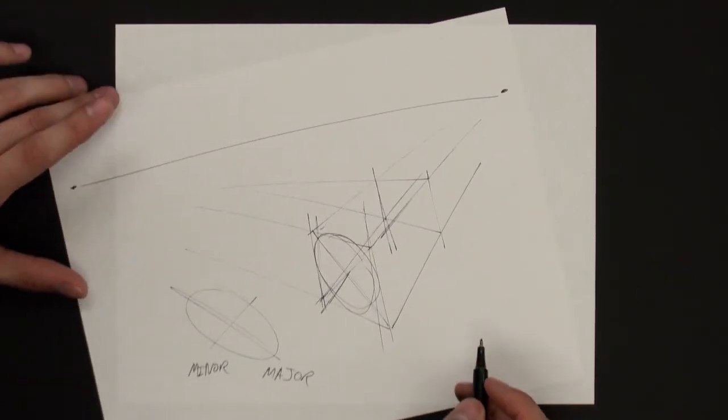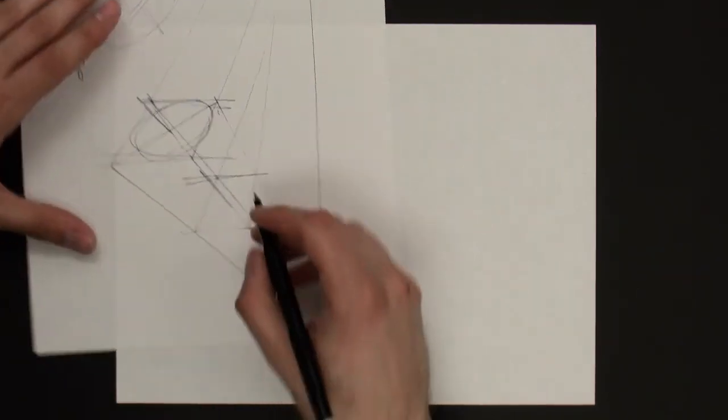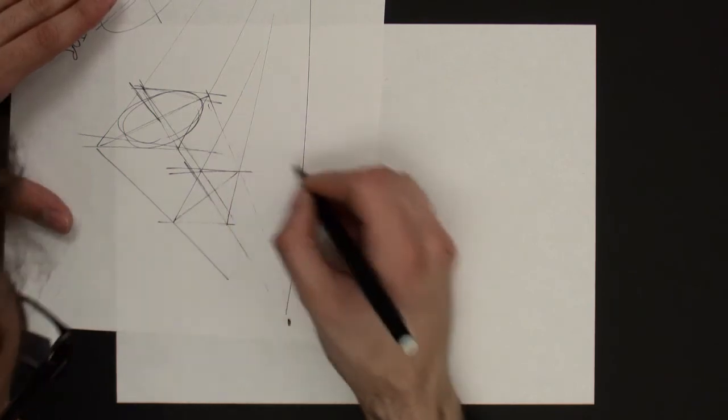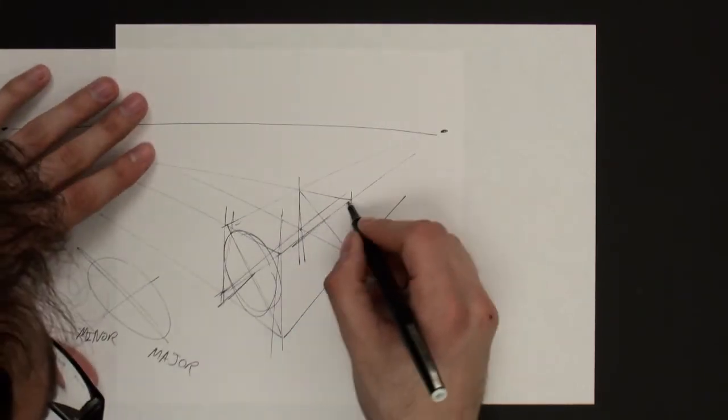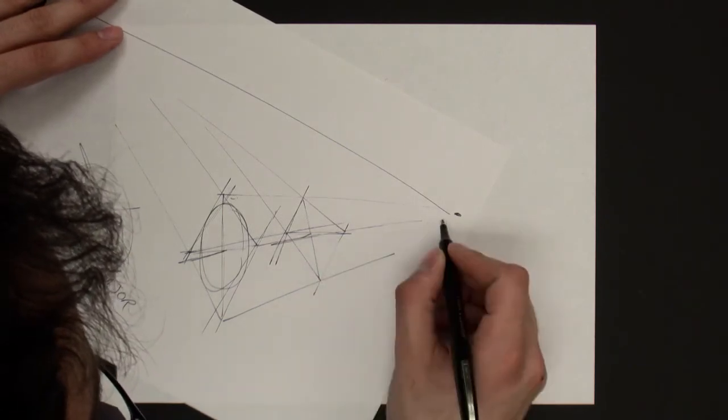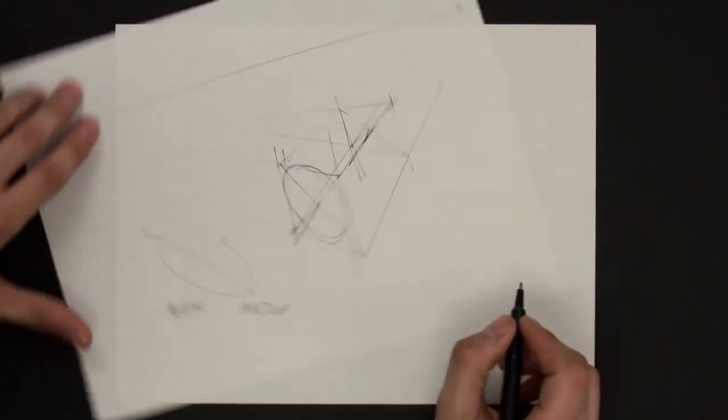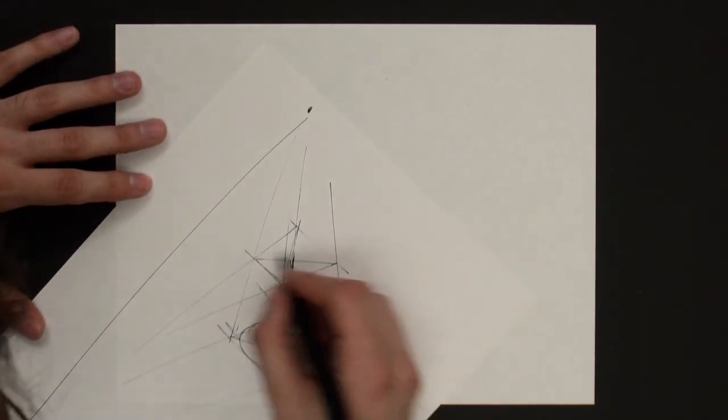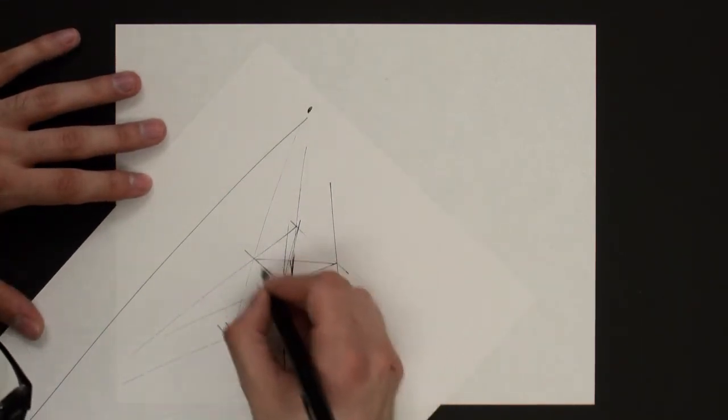And then the same thing is true for the back edge. So we can line up and drop some diagonals in. Where they meet is along the center. So that's where we want our minor axis to be. And we'll go ahead and draw that ellipse in.